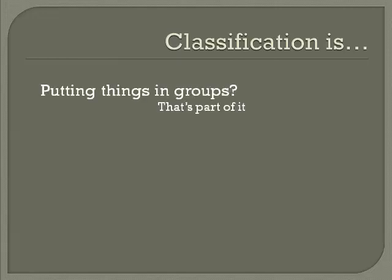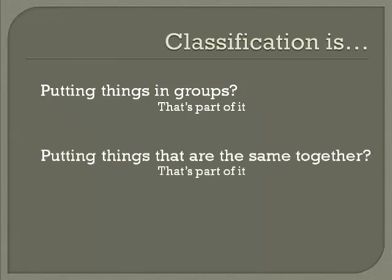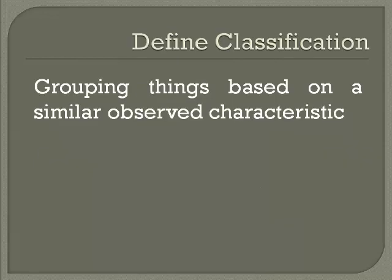Our third thing is classification. What is classification? It's putting things into groups — putting things into groups based on something that's the same about them. So let's define classification: it's grouping things based on a similar observed characteristic. If you haven't picked up on the running thread through all of these, it's making observations.